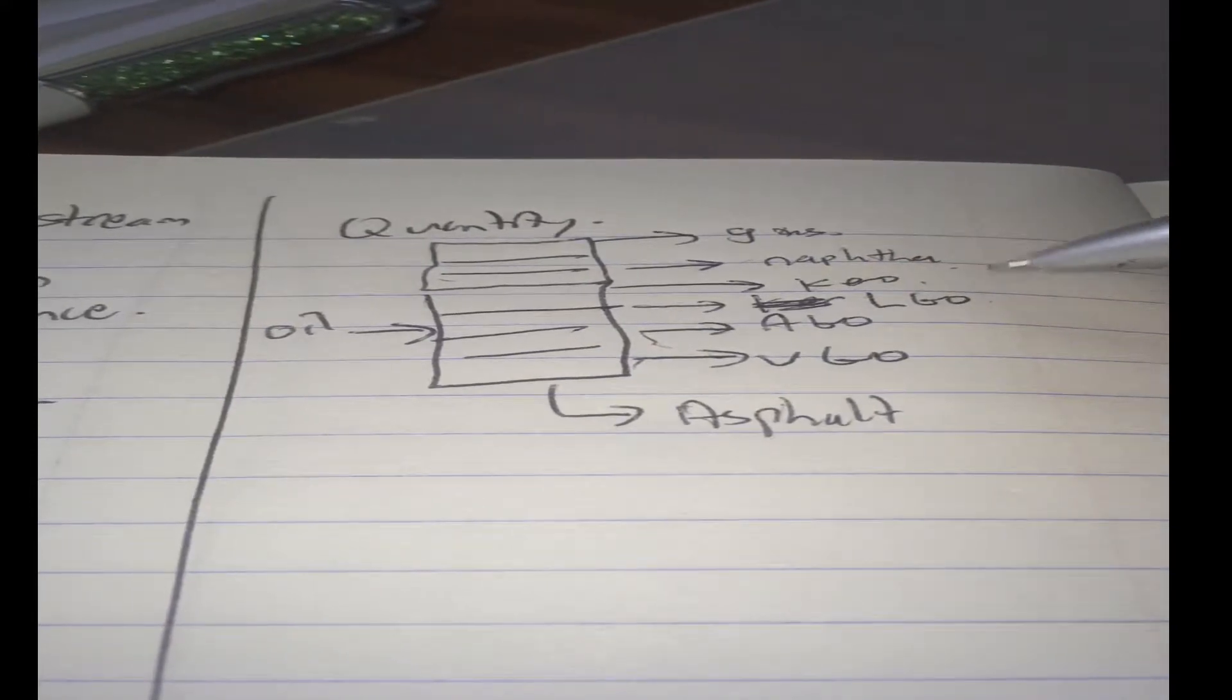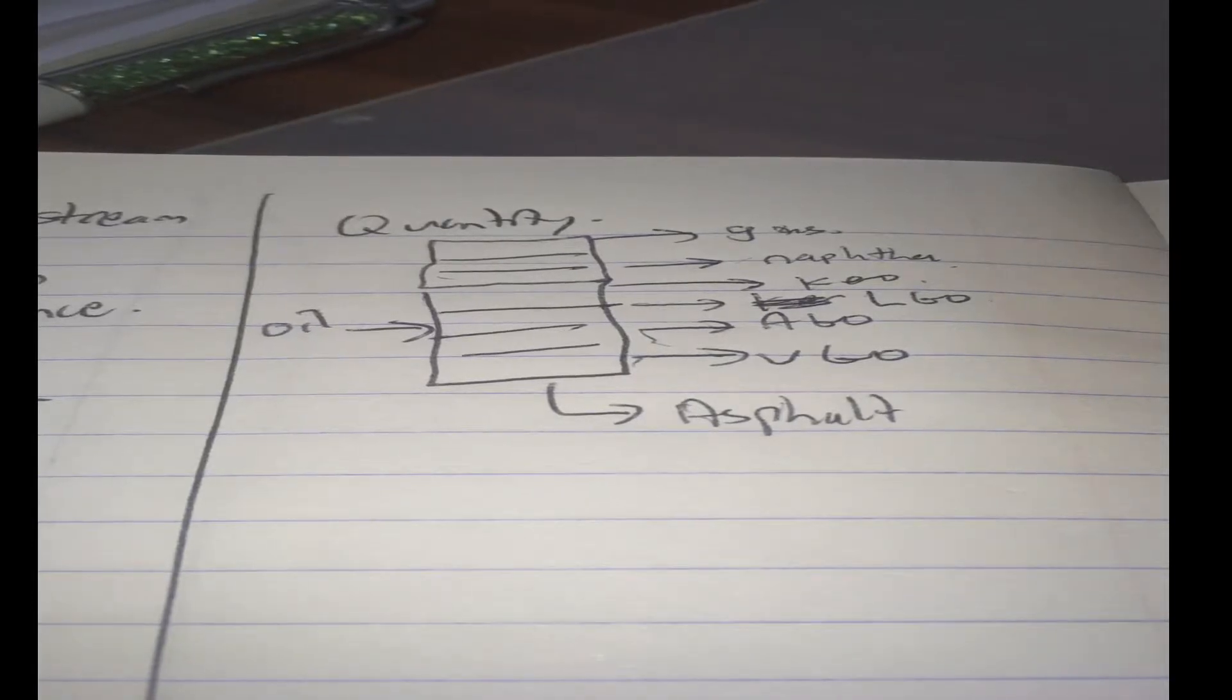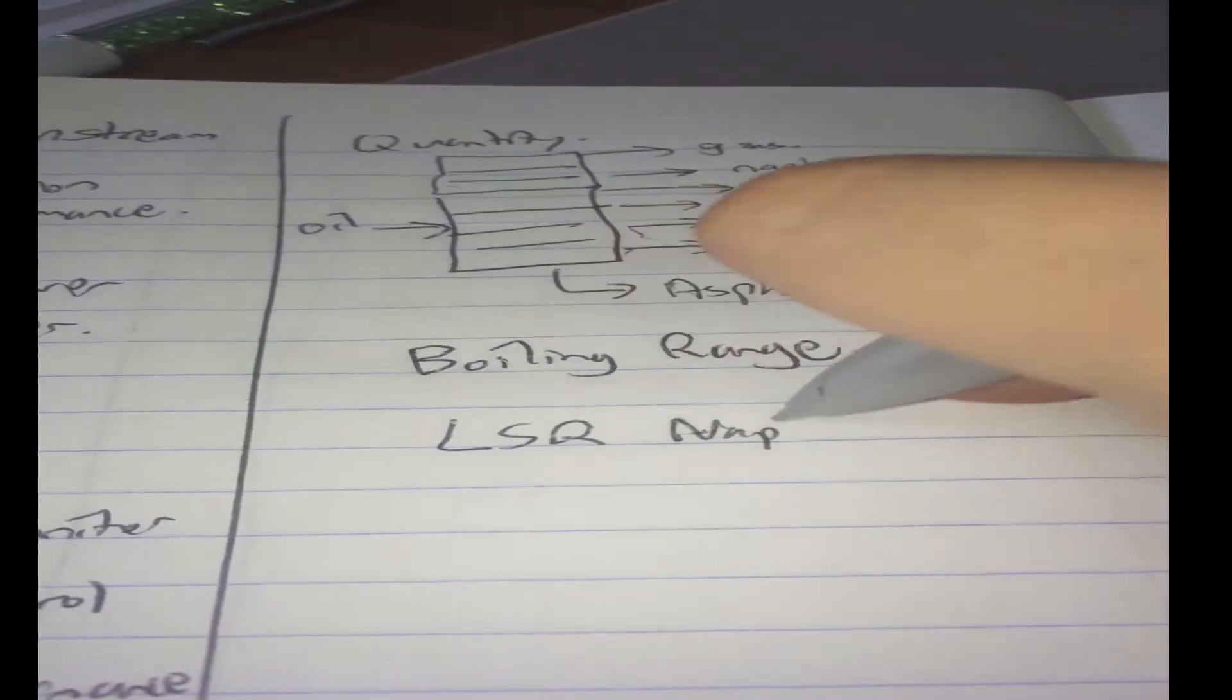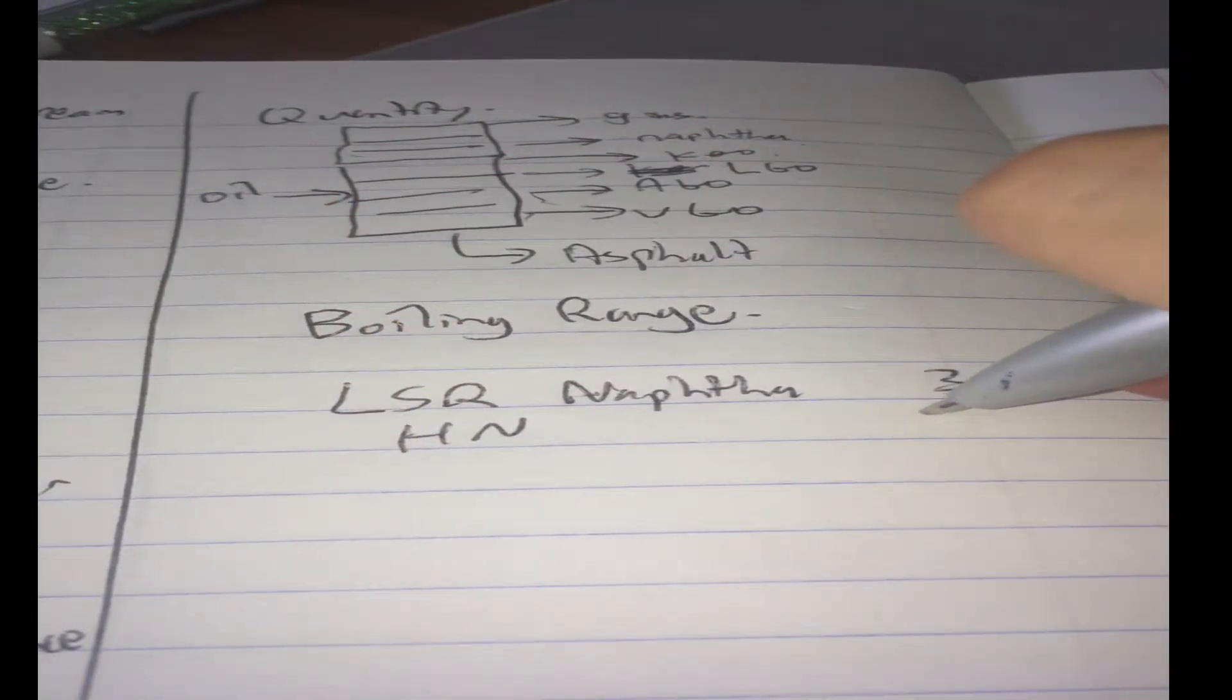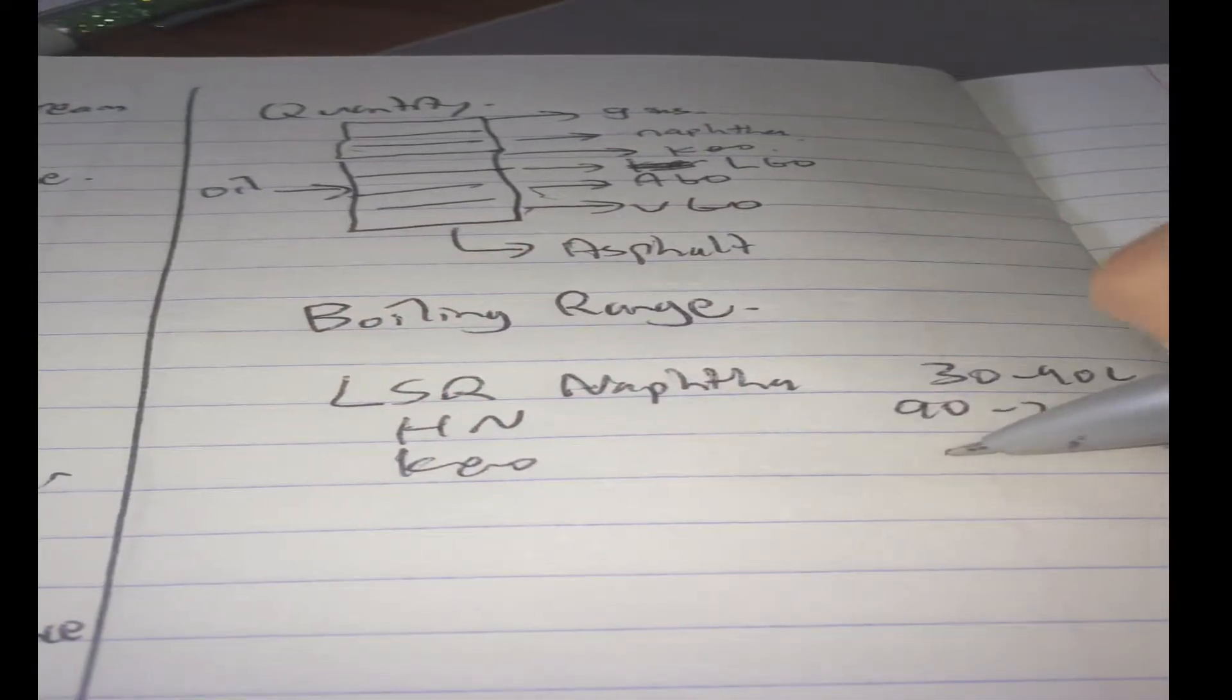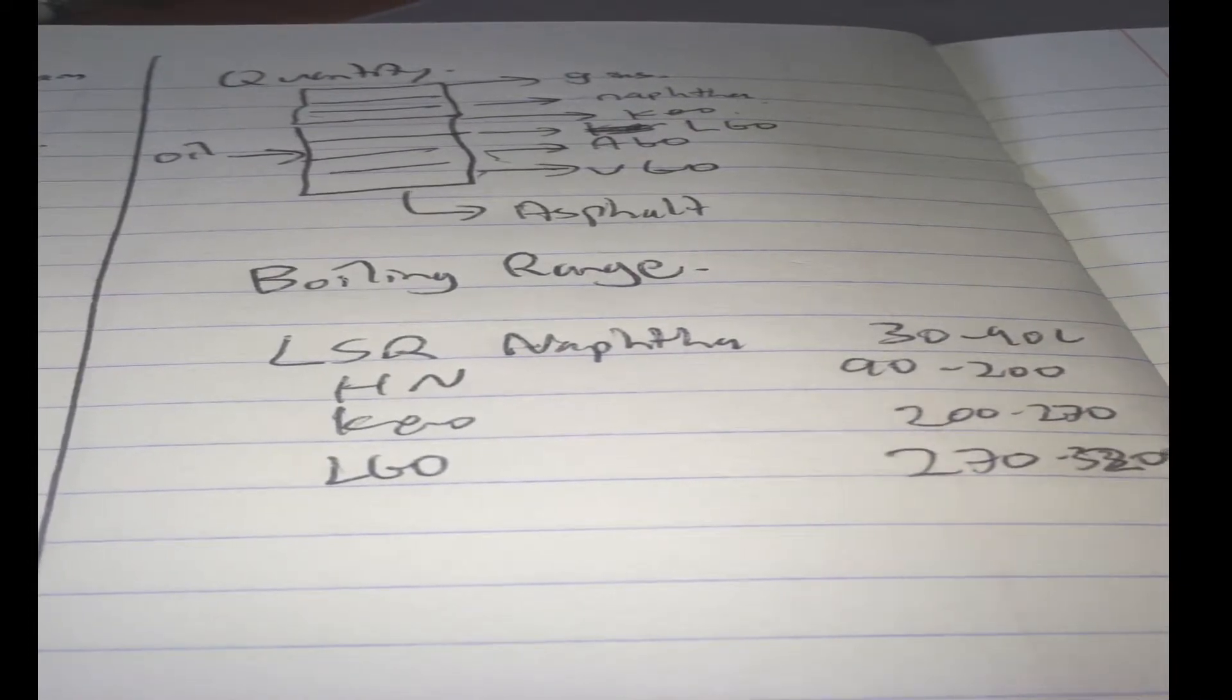So, how do we actually increase the quantity of all these products and do it in such a way that the specs of the fuel are maintained? Now, one thing we can do is play with boiling range. What do I mean by that? You've seen before that light straight run nafta has a boiling range of 30 to 90 degrees C. Heavy nafta, around 90 to 200. Kerosene, 200 to 270. Light gas oil, 270 to 320. All these are in degrees. Atmospheric gas oil, that's about the highest, 320 to 420.